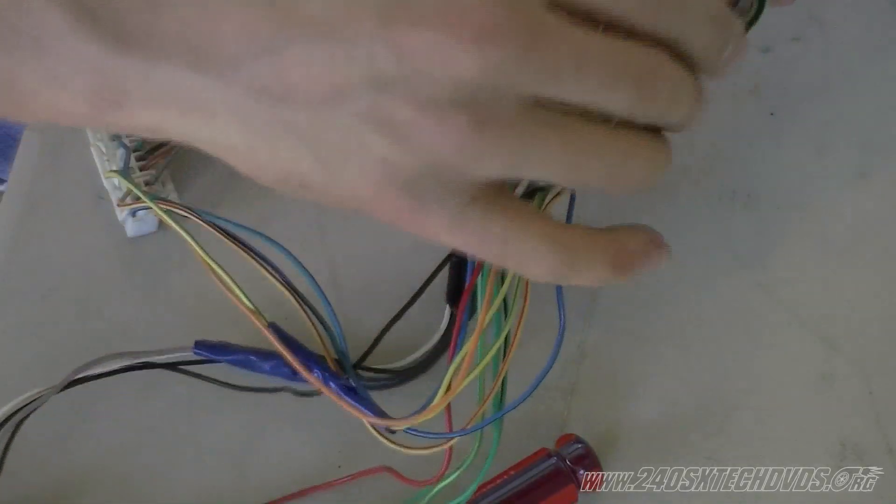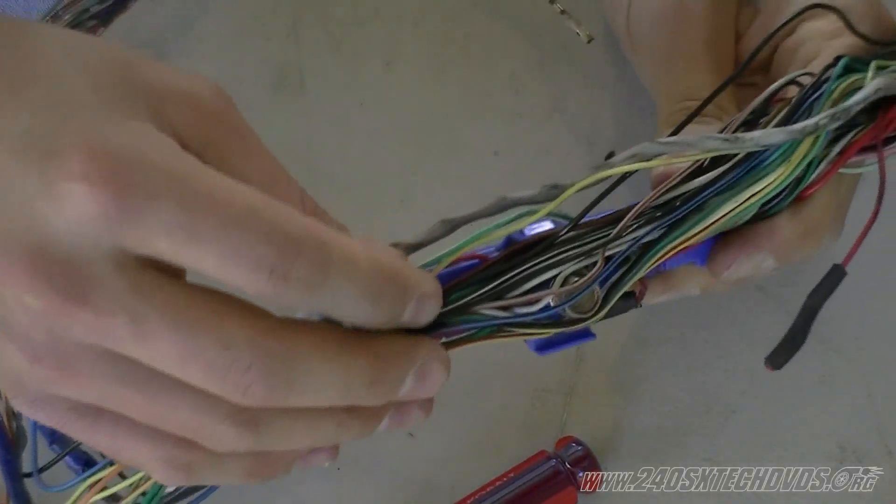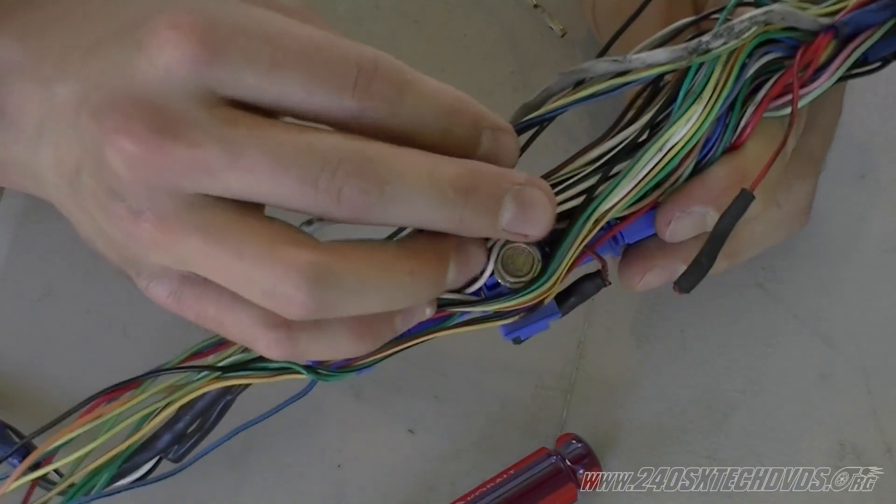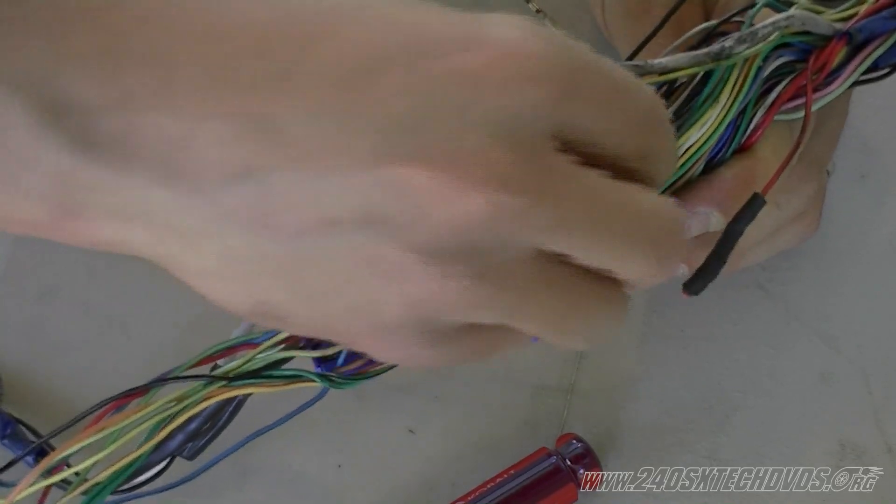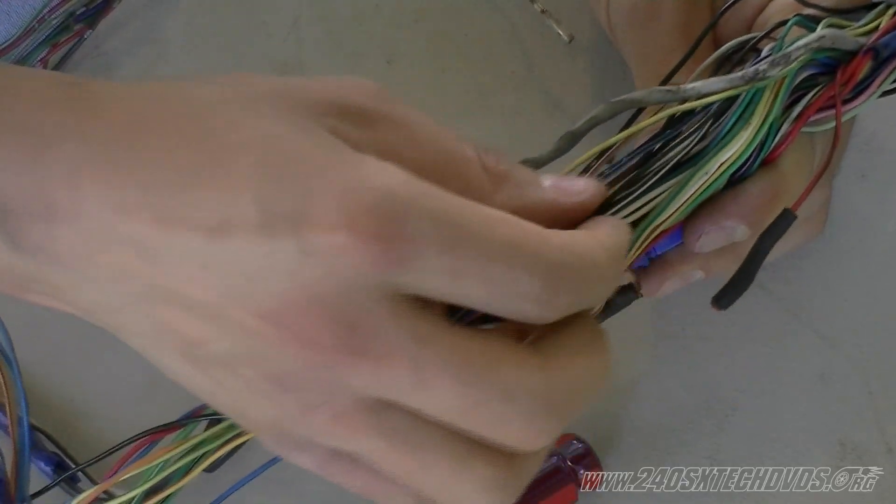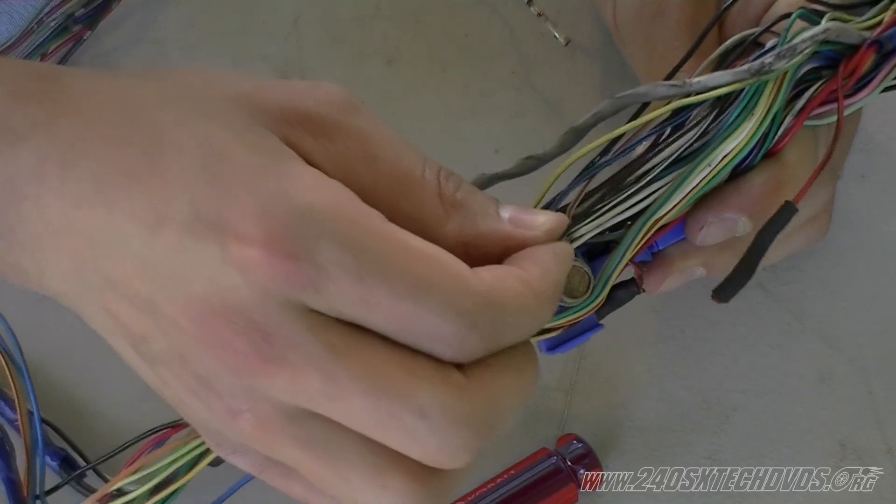It doesn't really matter which one you use. Like on the ECU plug here, you have quite a few black wires. They're all for ground. All you got to do is splice and solder it on to another black wire and you'll have your ground there.